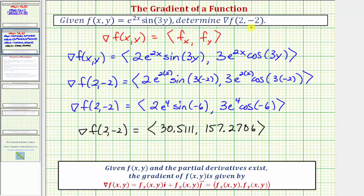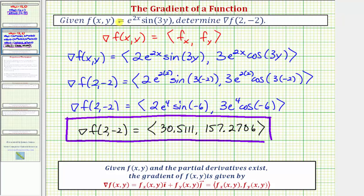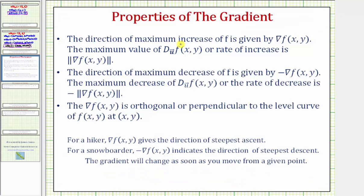Now that we have the gradient of f at the point (2, -2), let's review what this means. Remember f(x, y) defines a surface, and the gradient at the point (2, -2) tells us the direction of maximum increase of f. It's also true that the maximum value of the directional derivative — the rate of increase — equals the magnitude of the gradient at that point. I hope you found this helpful.